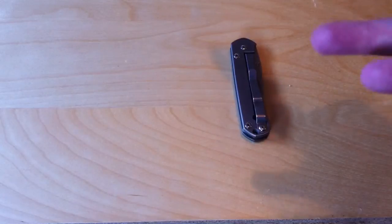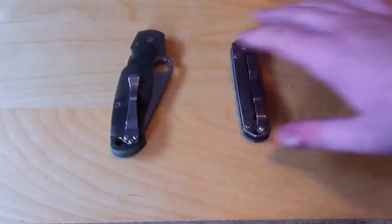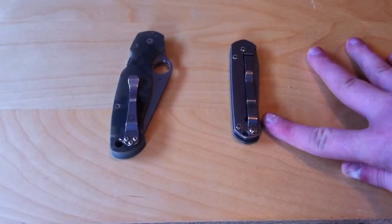So when you go harder, you get better edge retention, but you get a brittler steel. When you go softer, you get tougher steel, but with less edge retention.